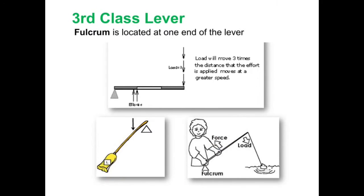With the third class lever, the fulcrum again is at one end, just like the second class lever. But what makes it different is that your effort force is going to be closer to the fulcrum than your resistance force, or that load, to the fulcrum.